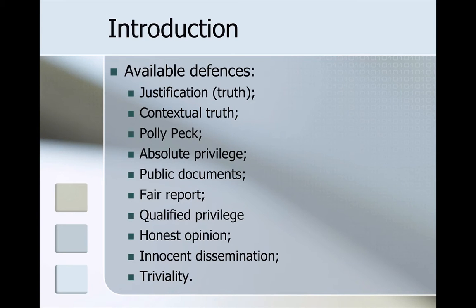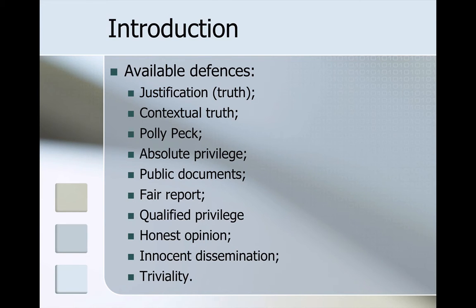The applicable defences, if it does go to trial, are as follows: justification, also known as truth; contextual truth, referred to as the polypec defence; absolute privilege; a fair report dealing with public documents; qualified privilege; honest opinion; innocent dissemination; and triviality. We are going to at least briefly look at these available defences.